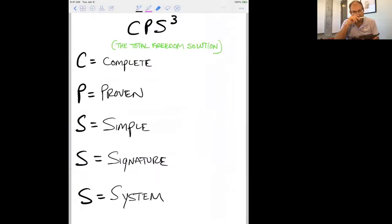So this is what you're missing—the CPS³. This is the total freedom solution. It's complete because it's A to Z, meaning you're not going to need more widgets or things. It's one complete system.